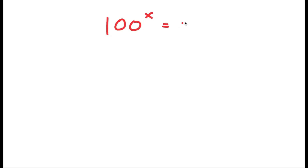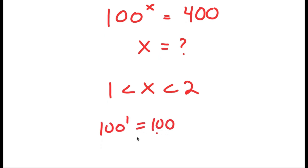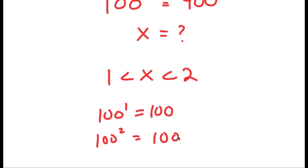In this video I'm going to solve an interesting exponential equation: 100 to the power of x is equal to 400, and I want to find the value of x. We can see that x is going to be between 1 and 2, because 100 to the power of 1 is 100 and 100 to the power of 2 is 10,000, so it's going to be closer to 1 than to 2.